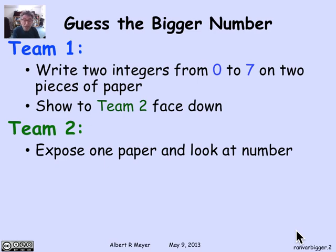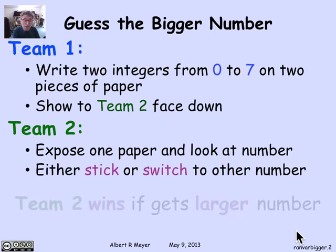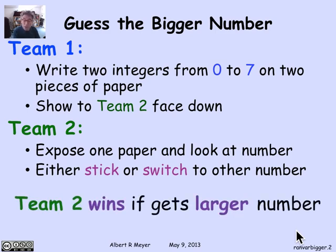Based on what that number is, team two makes a decision: stick with the number they have, or switch to the other unknown number on the face-down piece of paper. That will be their final number. Team two wins if they wind up with the larger number. They'll look at the exposed number and try to decide whether it looks like a big number or a little number. If it looks big, they'll stick with it; if it looks little, they'll switch.